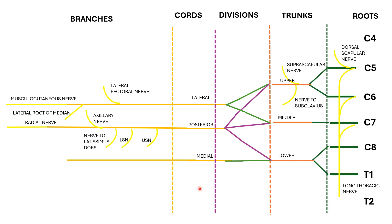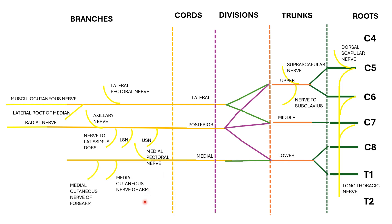From the medial cord, we have five branches: the medial pectoral nerve, medial cutaneous nerve of arm, medial cutaneous nerve of forearm, medial root of median nerve, and the ulnar nerve. The lateral root of median and the medial root of median join together to form the median nerve. Thus we have all the nerves which supply the upper limb.